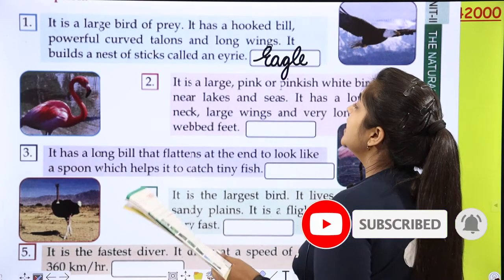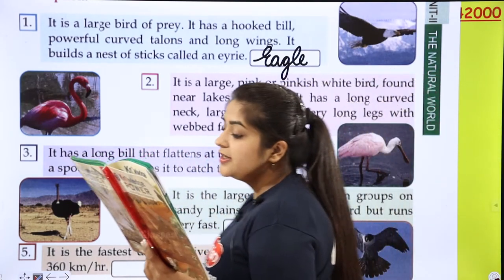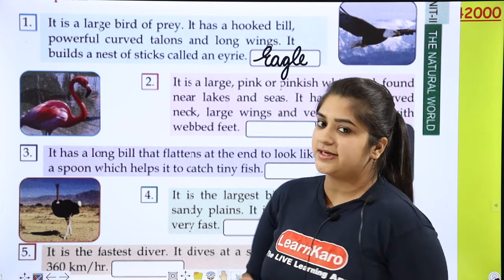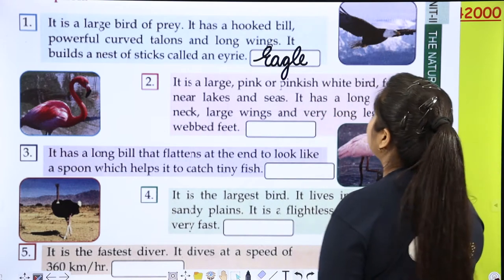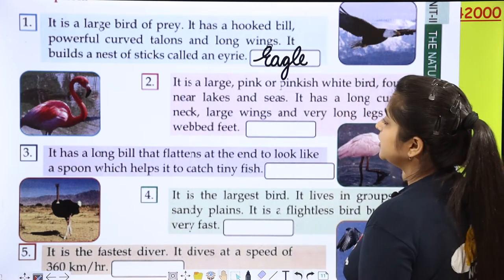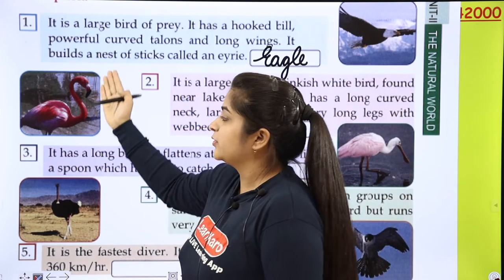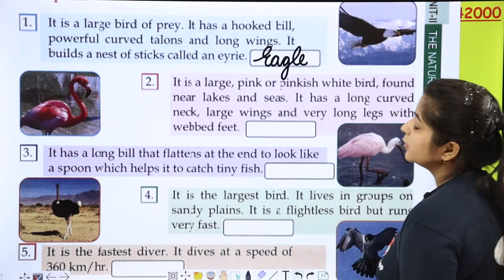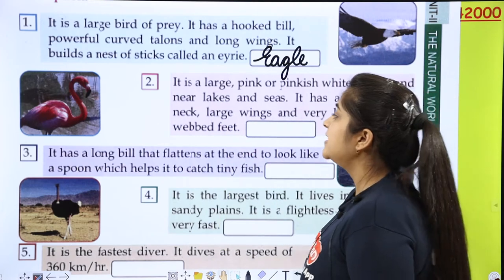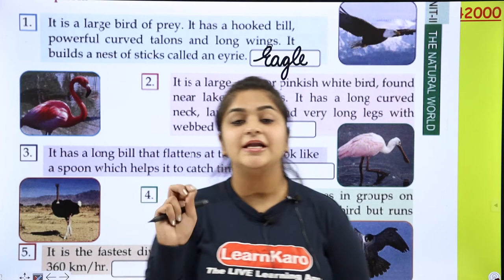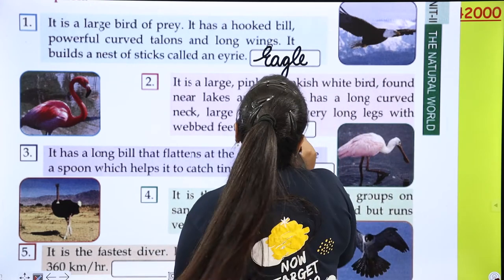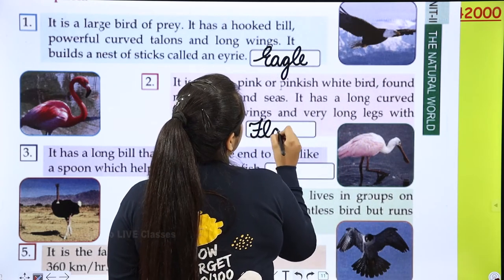It is a large pink and pinkish-white bird found near lakes and seas. It is a bird which has a long and curved neck, big wings, and long legs with webbed feet — webbed means jali feet. And the name of the bird is flamingo. It is a beautiful bird.